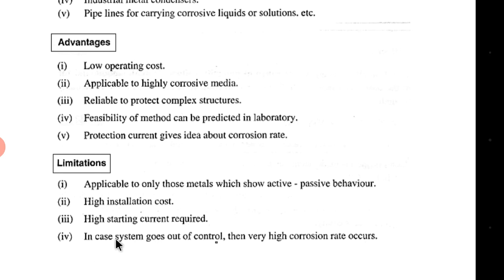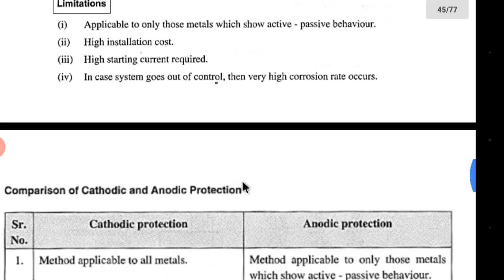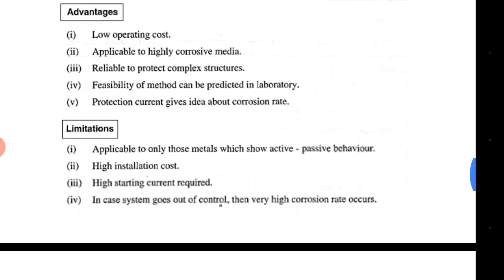Some limitations: if the system goes out of control — meaning if you don't maintain the exact passive range and the potential increases or decreases — the corrosion rate will drastically increase. A high starting current is required, and initial installation involves high cost. The method is only applicable to metals which show active and passive behavior; not all metals show a large passive range, so it cannot be used for every metal.